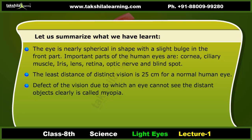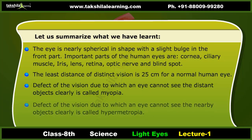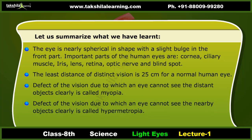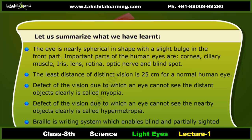A defect of vision due to which an eye cannot see distant objects clearly is called myopia. A defect due to which an eye cannot see nearby objects clearly is called hypermetropia. Braille is a writing system which enables blind and partially sighted people to read and write through touch.